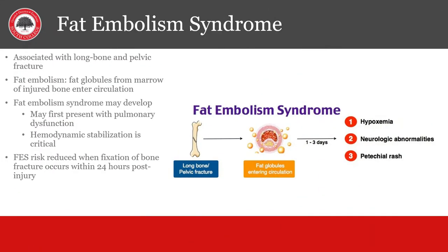Much like a pulmonary embolism from a DVT, a fat embolism can enter the pulmonary circulation from a recent fracture of a large bone in the leg or pelvis. The fat globules enter the bloodstream and can cause a PE-like syndrome with hypoxemia, neurological problems, and petechial rash. The key to preventing this is to get bone fractures fixed quickly.